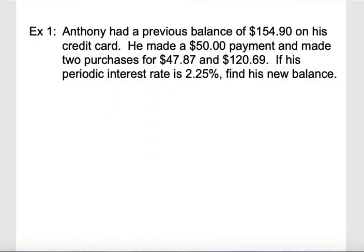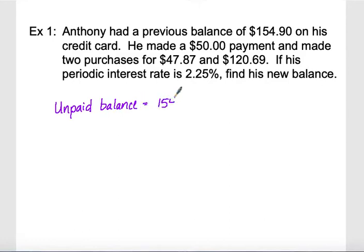Let's look at our first example. Anthony had a previous balance of $154.90. He made a $50 payment and made two purchases for $47.87 and $120.69. His periodic interest rate is 2.25%. The first thing we calculate is what portion was not paid — the unpaid balance from the previous month.